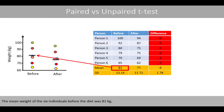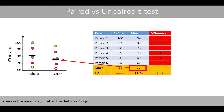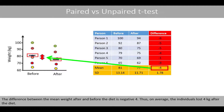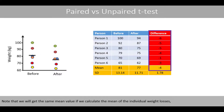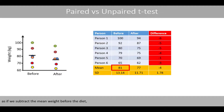The mean weight of the six individuals before the diet was 81 kilos, whereas the mean weight after the diet was 77 kilos. The difference between the mean weight after and before the diet is negative four. Thus, on average, the individuals lost four kilos after the diet. Note that we get the same mean value if we calculate the mean of the individual weight losses as if we subtract the mean weight before the diet from the mean weight after the diet.